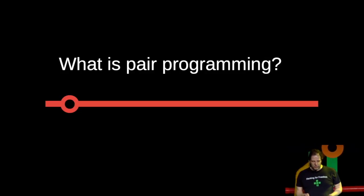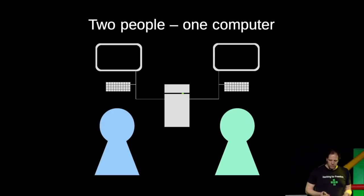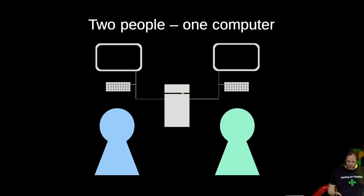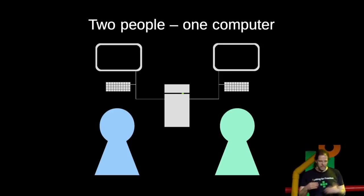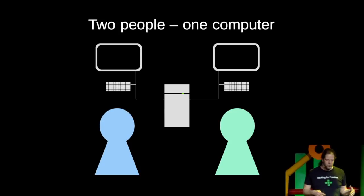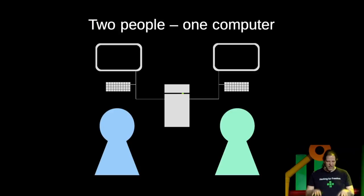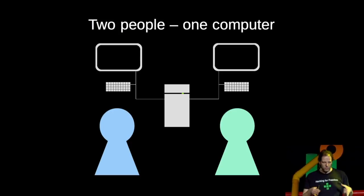So what is pair programming? It means that you have two people working on one computer, and that's important — it's really only one computer. You're not collaborating via pull requests or by sending patches around, but you're actually working physically on the same computer. Both people have control of the mouse, both see exactly the same on the screen, both can type at the same time, so they have to talk to each other and coordinate.